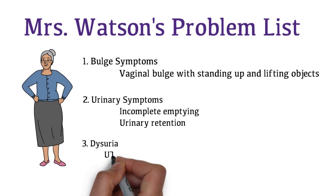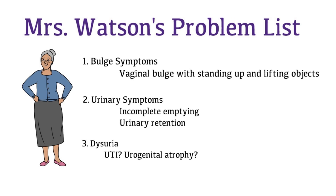3. Dysuria. Could her dysuria be caused by a urinary tract infection or urogenital atrophy?